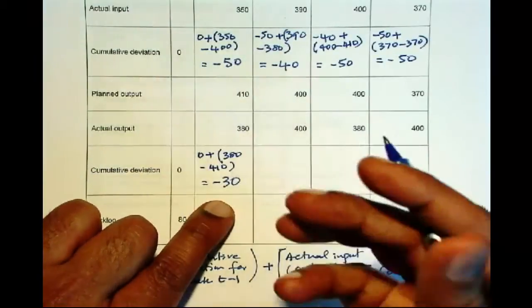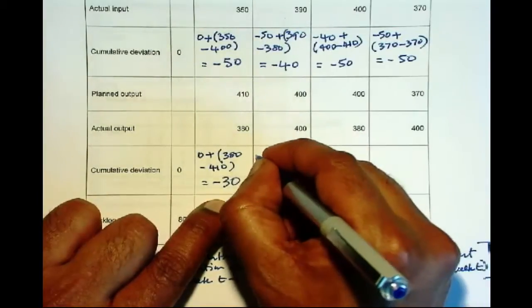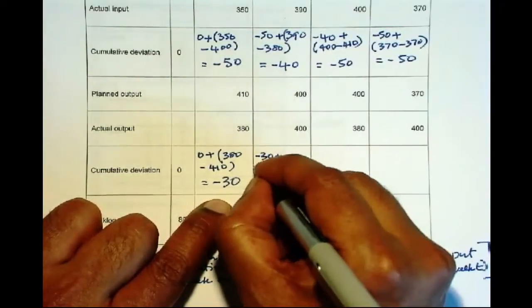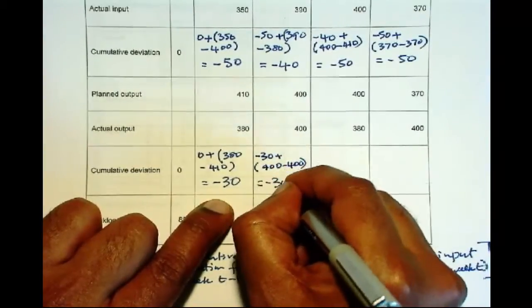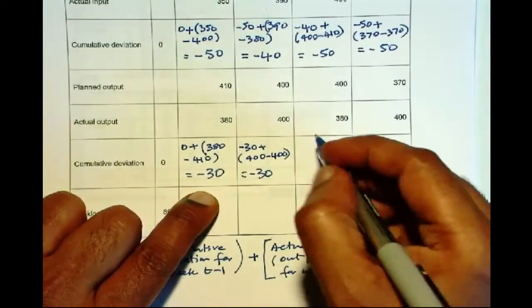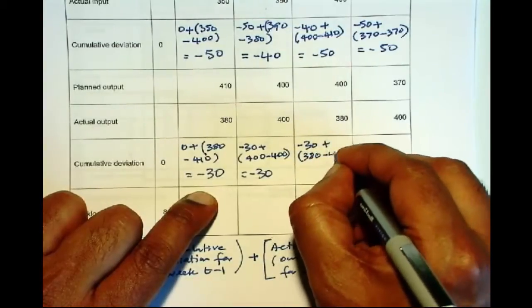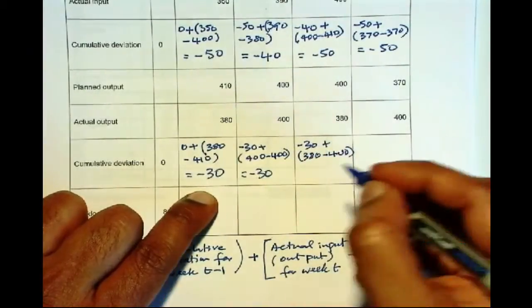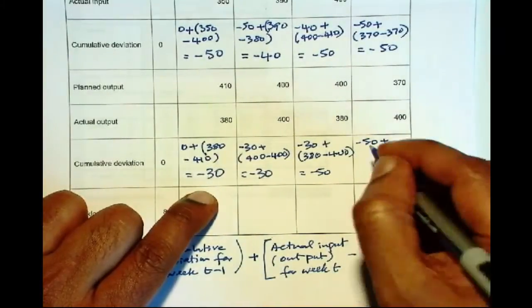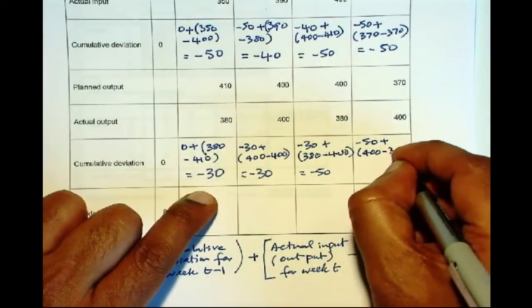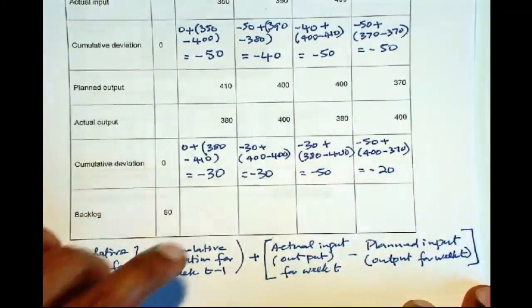So the planned output is running 30 units - usually it will be in machine hours - lower than what we were planning. Then minus 30 plus 400 minus 400 gives you minus 30. And then minus 30 plus 380 minus 400 gives you minus 50. Minus 50 plus 400 minus 370 gives you minus 20.